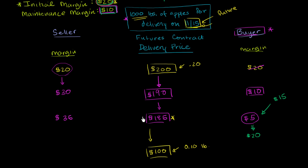But remember, because of this marking the market and because of the margin transfers here, as this delivery price went down from $200 to $100, there would have been a transfer from this guy's margin account to this guy's margin account of $100. So instead of just getting the $100 for that 1,000 pounds of apples, because this seller had this futures contract, he would have also gotten another $100 transferred into his margin account.